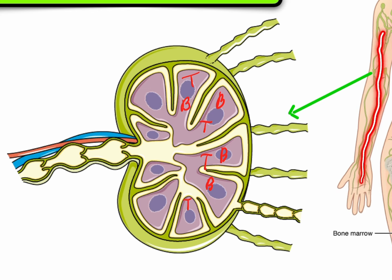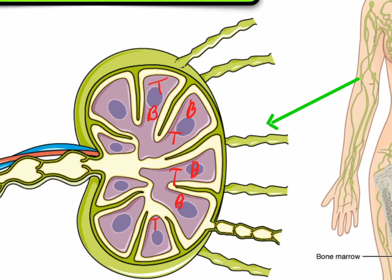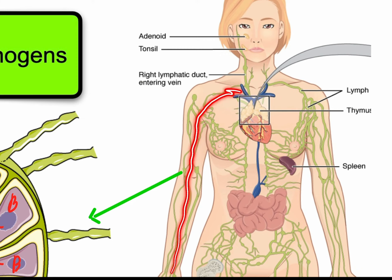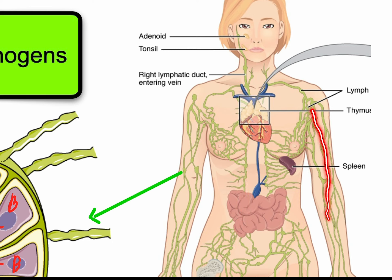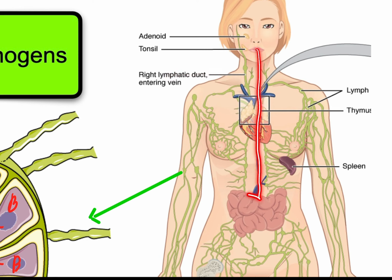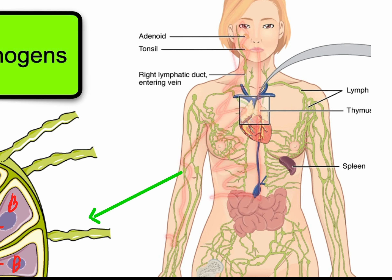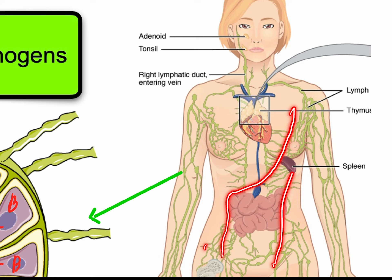Before any lymph is returned to the circulatory system, it passes through a lymph node or a series of lymph nodes. All the lymph is collected and moves back toward the heart — coming up from the lower legs and the abdominal cavity. There are two main places where it is returned: the right lymphatic duct, which returns lymph from roughly the upper-right quarter of the body, and the thoracic duct, which collects fluid from the remaining three-quarters including everything below and the left side.